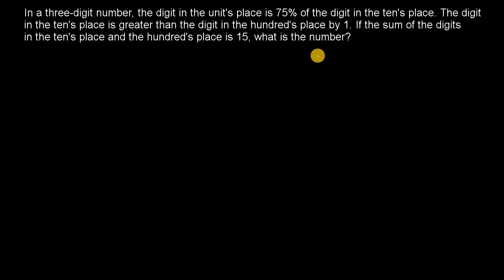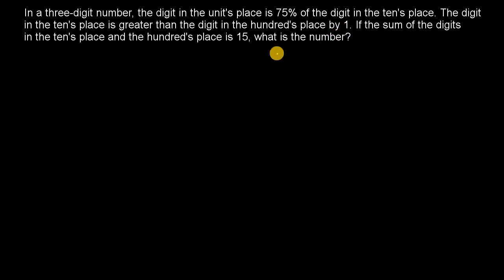Welcome! In today's episode, we will solve a mathematical problem given here. In a 3-digit number, the digit in the units place is 75% of the digit in the tens place. The digit in the tens place is greater than the digit in the hundreds place by 1. If the sum of the digits in the tens place and the hundreds place is 15, what is the number?